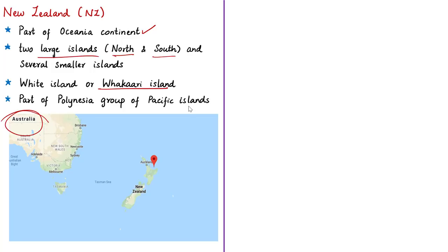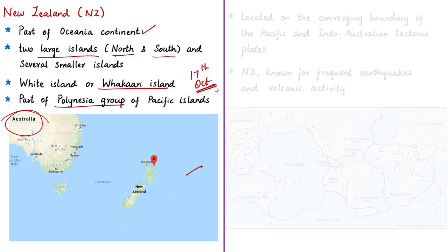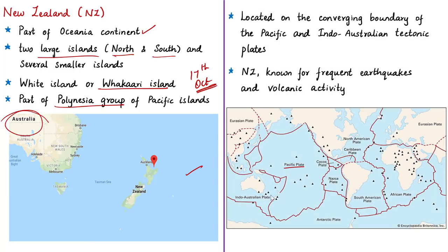New Zealand is part of the Polynesia group of islands in the Pacific Ocean. It is located on the plate boundary of the Pacific and Indo-Australian tectonic plates. Specifically, New Zealand is located on the converging boundary of the Indo-Australian plate and the Pacific plate. As a result of this tectonic setting, New Zealand is known for frequent earthquakes and volcanic activity.